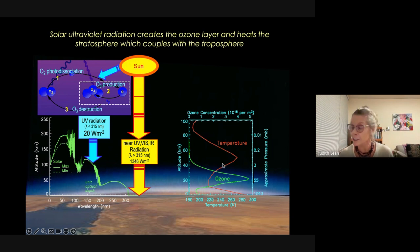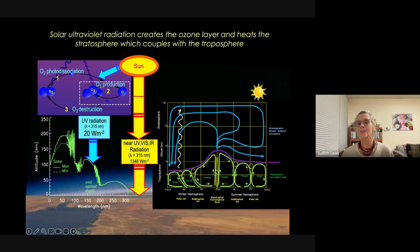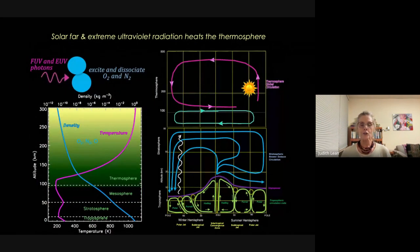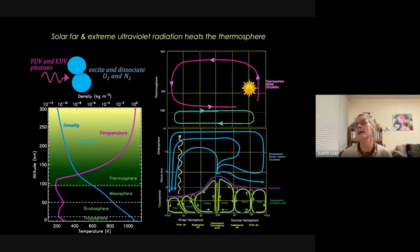The ozone absorbs ultraviolet radiation, heats the atmosphere, and produces the ozone layer, which protects us from the sun's UV radiation. So the sun actually produces the atmosphere that protects us from itself — which is really interesting. There's a large dynamical circulation, the Brewer-Dobson circulation, sitting on top of the troposphere. As we go higher into the thermosphere — above about 100 kilometers, extending to 1000 km — this is where satellites orbit.